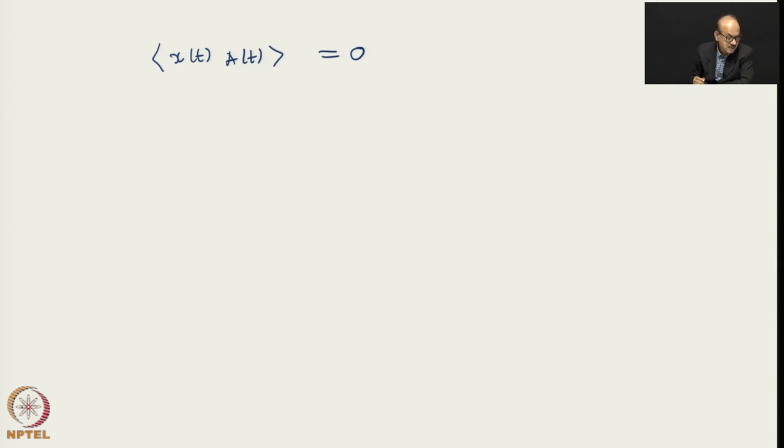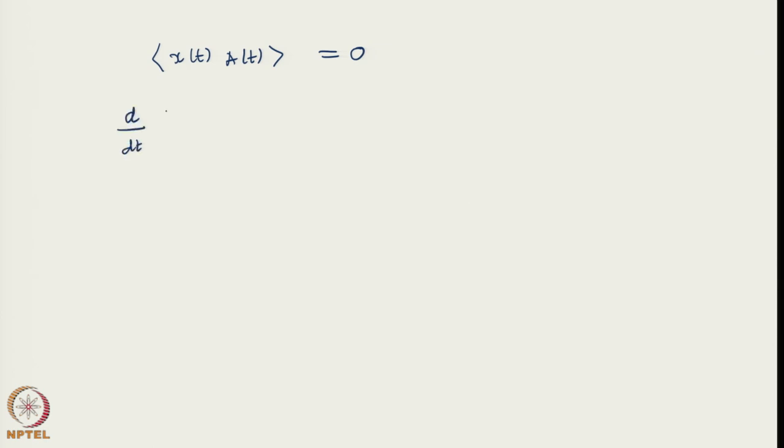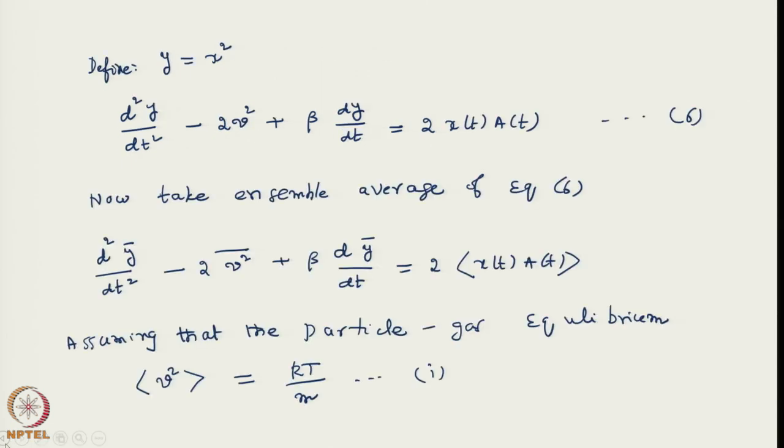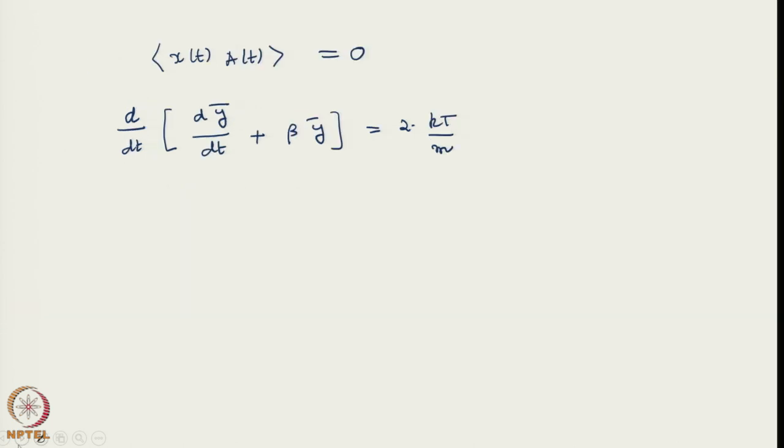With this, the equation takes the form d/dt[dȳ/dt + βȳ] = 2kT/m. You can see that if ⟨v²⟩ = kT/m, we can take that to the right hand side, the other expectation is 0, and d/dt is common, so I take it out.